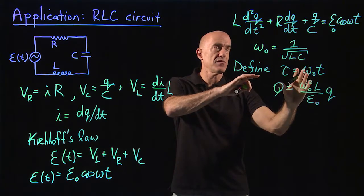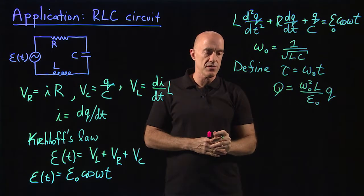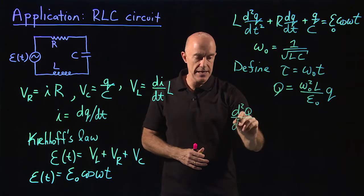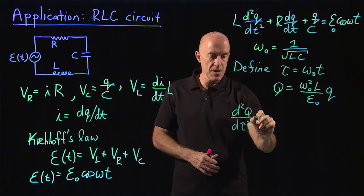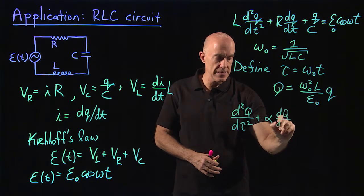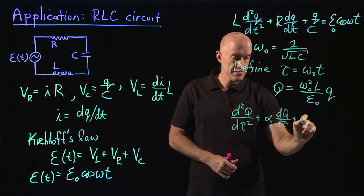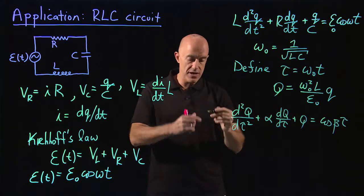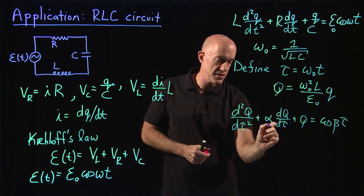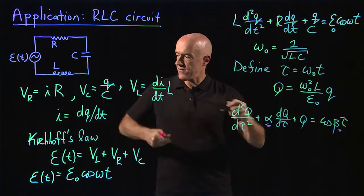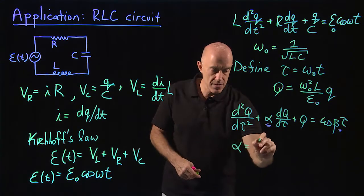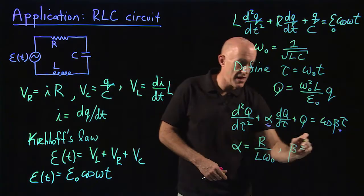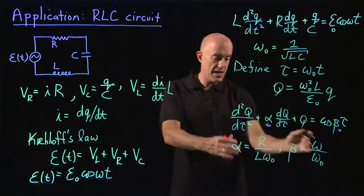You take these definitions and substitute it into the differential equation, and you end up with a dimensionless equation which looks like d²Q/dτ² plus α dQ/dτ plus Q equals cosine βτ, where you have two non-dimensional parameters in this equation: the α and the β. Alpha is given by R over Lω₀, and beta is given by ω divided by ω₀. And these are dimensionless.